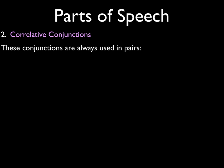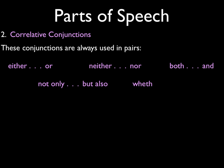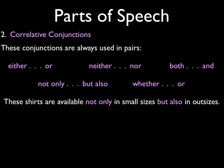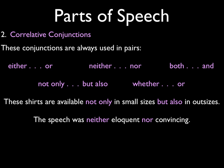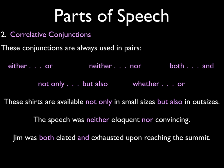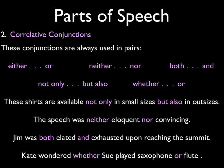There are also correlative conjunctions, which are always used in pairs: either/or, neither/nor, both/and, not only/but also, and whether/or. For example: 'These shirts are available not only in small sizes but also in outsizes.' 'The speech was neither eloquent nor convincing.' 'Jim was both elated and exhausted upon reaching the summit — he got to the top of the mountain and the view was gorgeous, but his body was exhausted from the climb.' 'Kate wondered whether Sue played saxophone or flute.' Those all are called correlative.